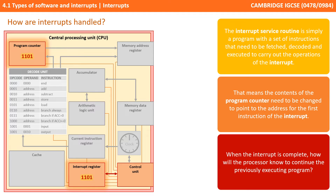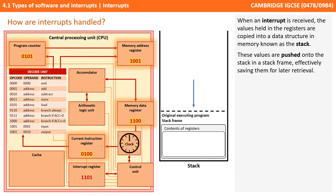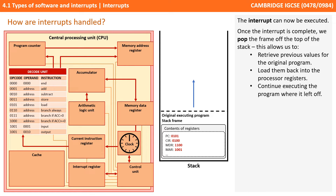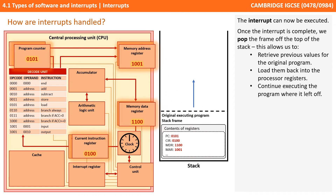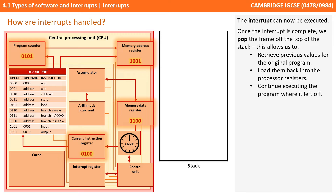But when the interrupt completes, how will the processor know to continue the previous program it had to suspend? When an interrupt is received, the current values held in the registers are copied into a data structure in memory known as the stack. These values are pushed onto the stack in a stack frame, effectively saving them for later retrieval. The interrupt can now be executed, and once it is complete, we pop the frame off the top of the stack, retrieve the previous values for the original program, load them back into the processor's registers, and carry on executing where we left off.